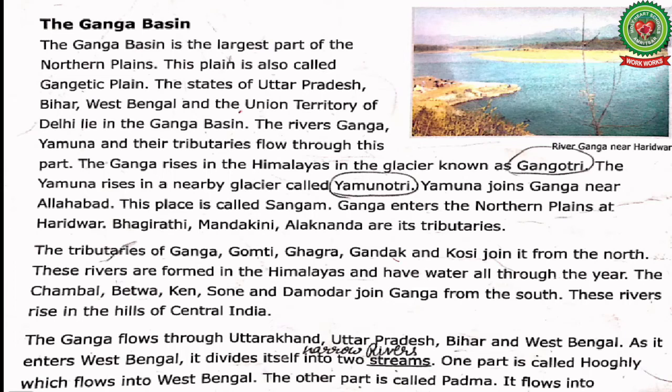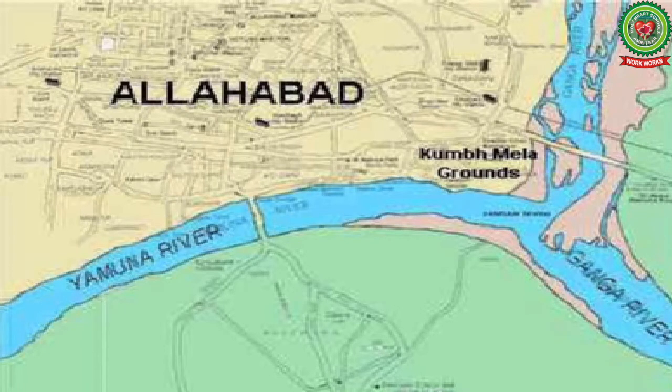Yamuna joins Ganga near Allahabad, which is in Uttar Pradesh. This meeting place is called Sangam — wherever two rivers meet is called a Sangam. Ganga enters the northern plains at Haridwar. Rivers like Bhagirathi, Mandakini, and Alaknanda are the left bank tributaries of river Ganga, meaning they join river Ganga from the left side.